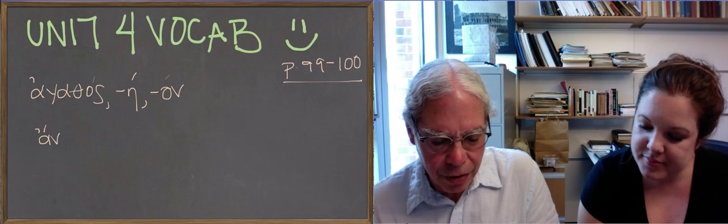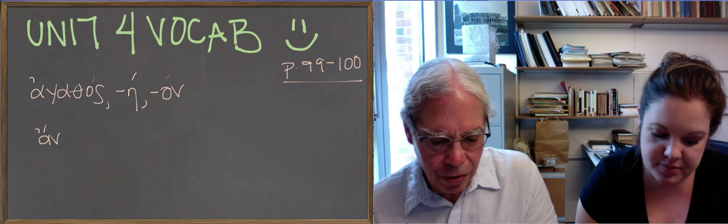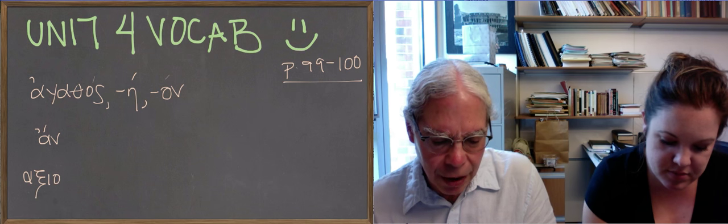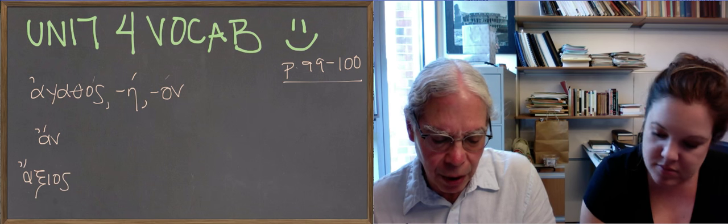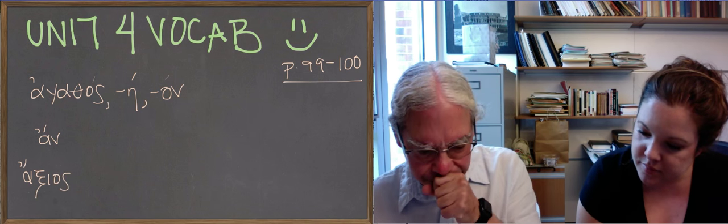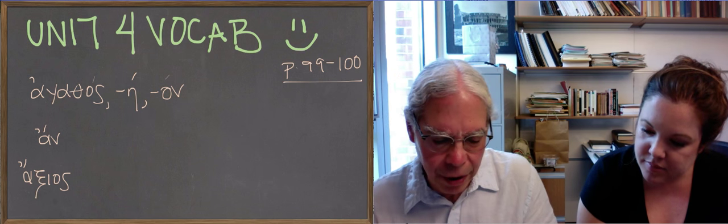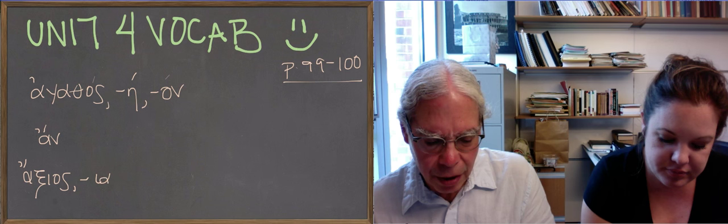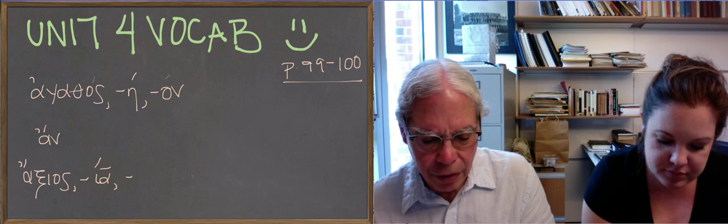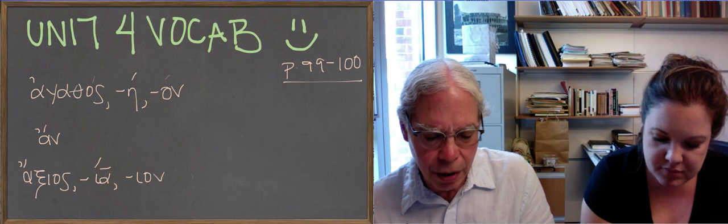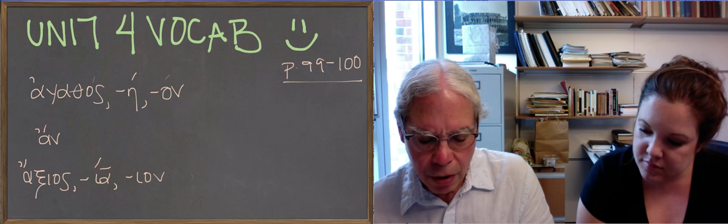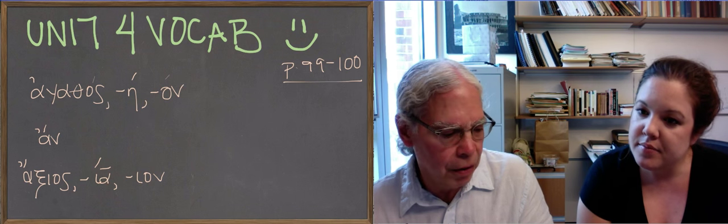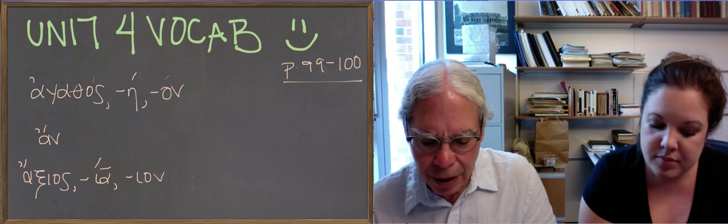The next word is axios, another adjective, but this one is different because it has an iota before the os, which means that instead of having an eta in the feminine nominative singular, accusative singular, and so forth, it has long alphas. So it's axios, axia, axion, and they also teach you the negated form of this word, anaxios. It means worthy or worthy of something, and I think it's important to add, I don't know why they didn't add the genitive.